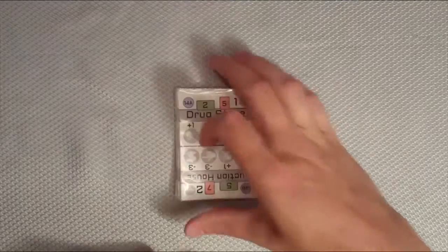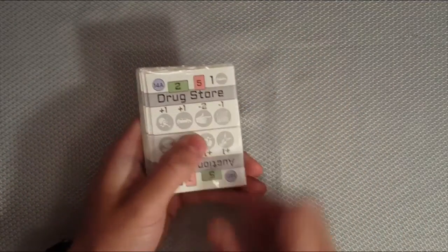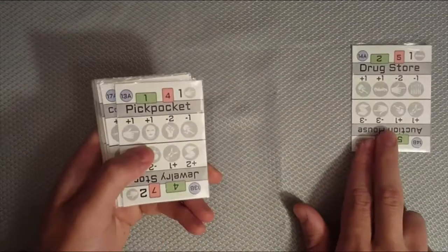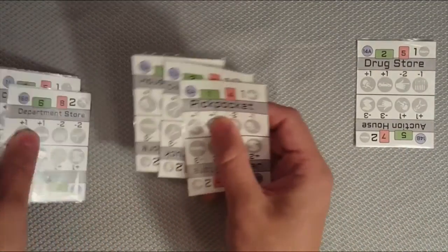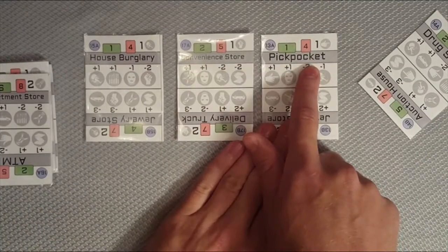So let's play through a game. Now go ahead and shuffle your cards. I've already gone through and done that, so let's just jump into it. First thing you'll do is discard one card. I'm going to draw three cards and choose from these three here. I choose house burglary, convenience store, or a pickpocket.